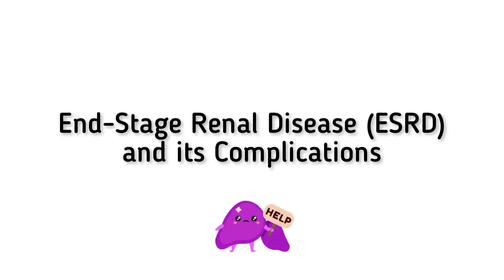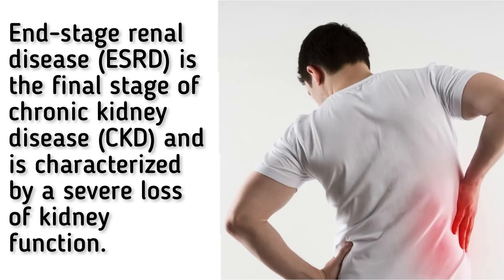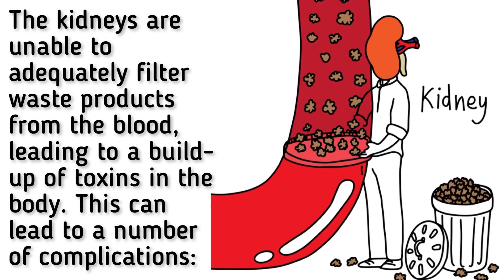End-stage renal disease, or ESRD, and its complications. End-stage renal disease is the final stage of chronic kidney disease and is characterized by a severe loss of kidney function. The kidneys are unable to adequately filter waste products from the blood, leading to a build-up of toxins in the body. This can lead to a number of complications.